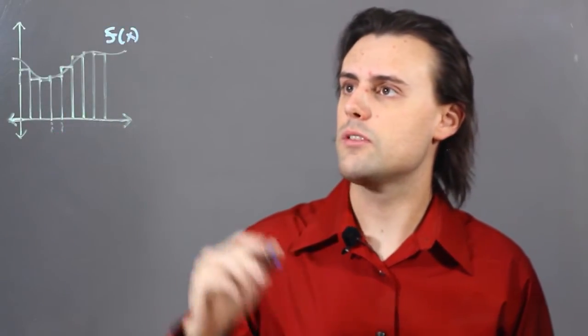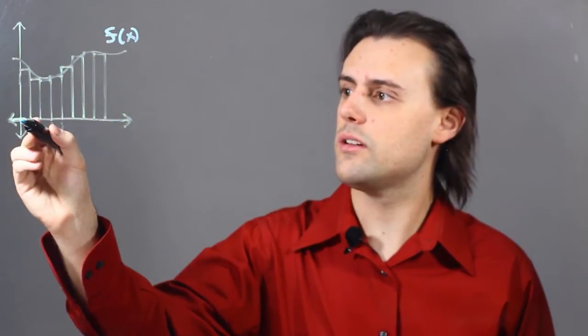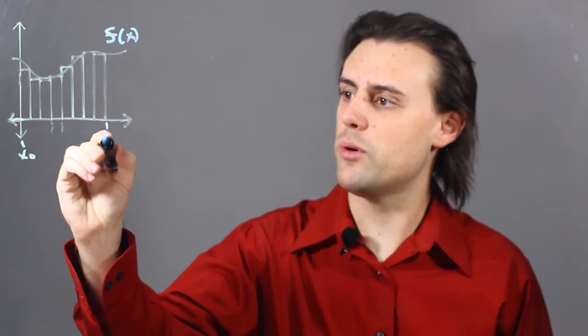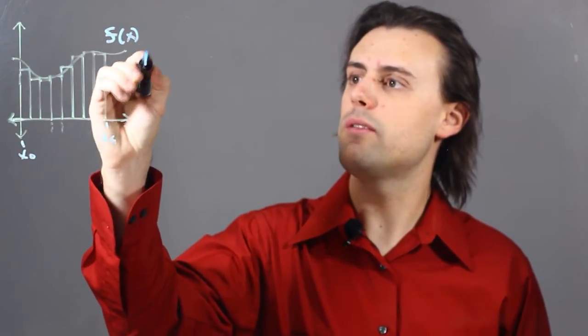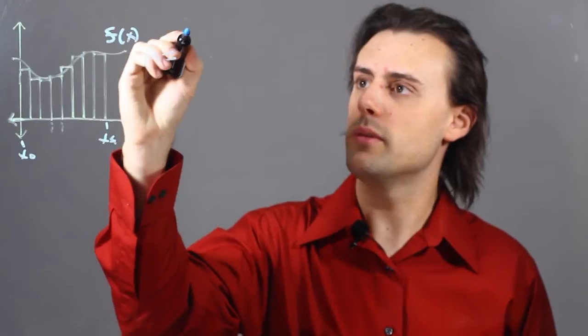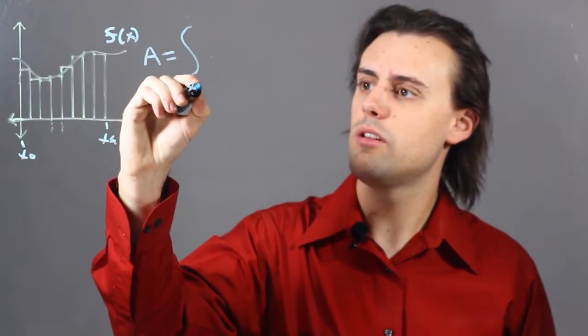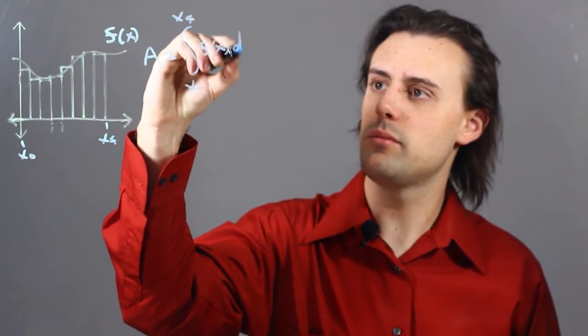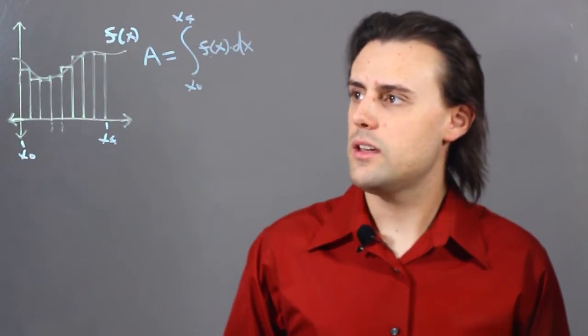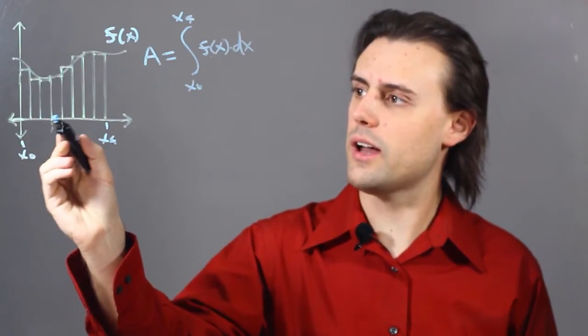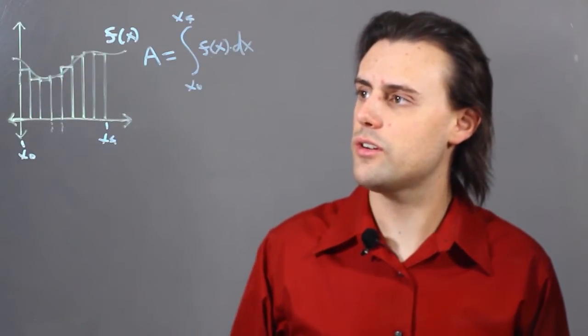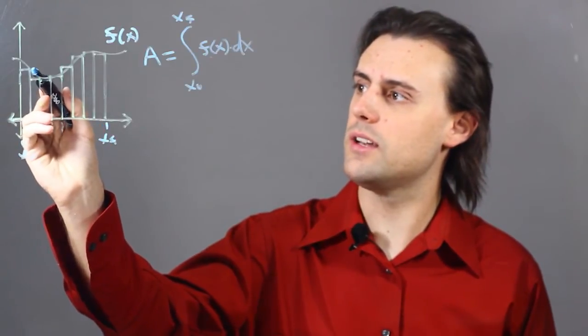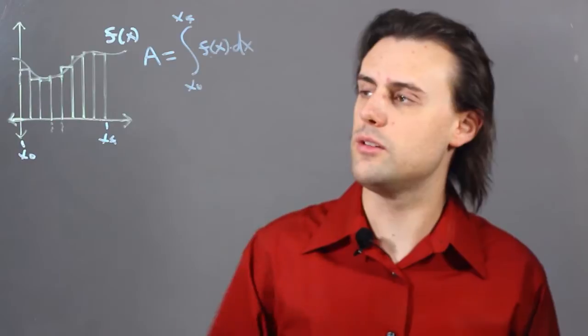So, the integral, which would be the area underneath this curve from some point x initial to some point x final, would be given in the continuum limit as the integral from x0 to x final of f of x times dx. Here, I have discretized the area underneath this curve using rectangles where the right endpoint is what's connecting to the actual continuous function.